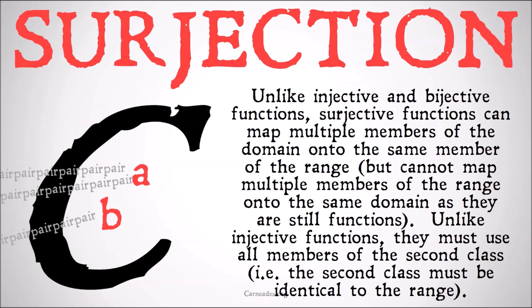Unlike injective and bijective functions, surjective functions can map multiple members of the domain onto the same member of the range, but cannot map multiple members of the range onto the same domain, as they're still functions. Unlike injective functions, they must use all members of the second class, i.e. the second class must be identical to the range of the function.